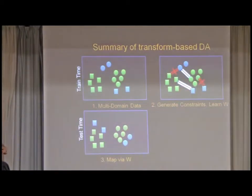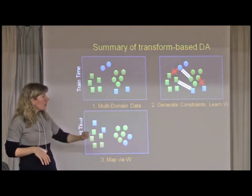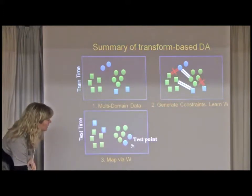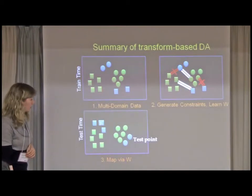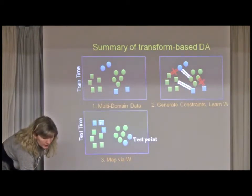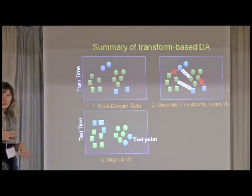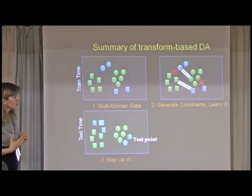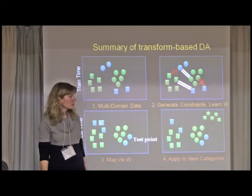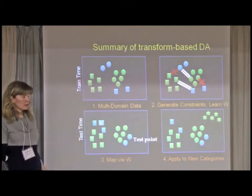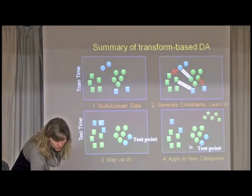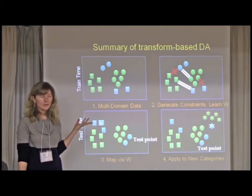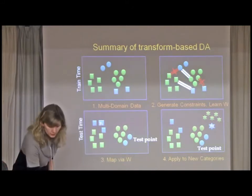Here's the summary of the approach. We have some training data in the source and the target. We have some constraints based on these class labels. At test time, we get a test point, we don't know which class it is. We apply the transformation that maps it to the source and we classify it. And what we're really interested in is transferring what we've learned about the structure of the domain shift to new categories. So here we have a new category shown with the stars that we hadn't seen in training, but we still apply the transformation the same way and classify it.